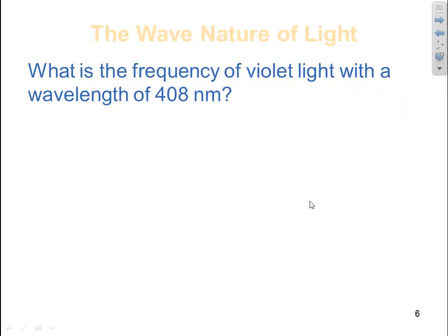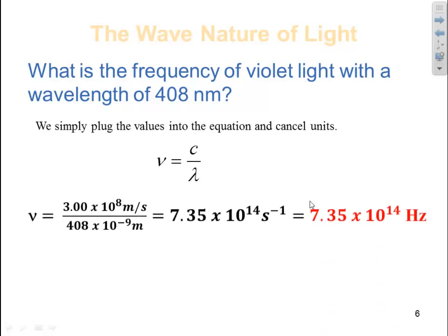Here's another question. What is the frequency of violet light with a wavelength of 408 nanometers? Simply plug the values into the equation and cancel units. Frequency equals 3.00 times 10 to the 8th meters per second divided by 408 times 10 to the minus 9th meters.